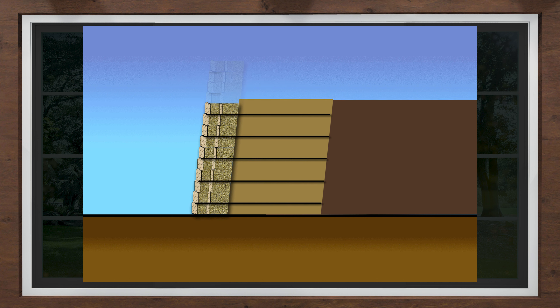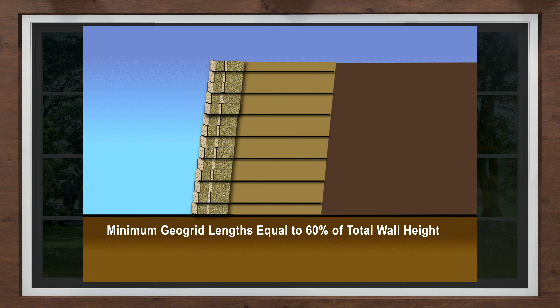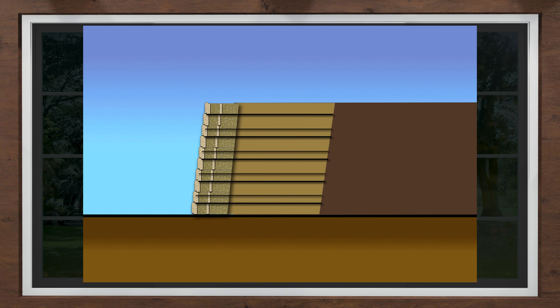Geogrid length varies in design, with minimum lengths at least 60% of the total wall height. You cannot increase the mass of the structure by using more layers of geogrid — more mass is achieved by lengthening the geogrid. Adding more layers of geogrid only increases the shear strength of the mass, not its weight.